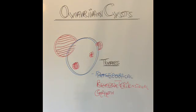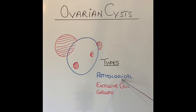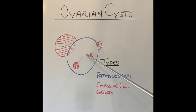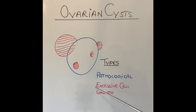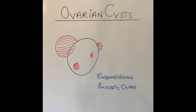In contrast to functional cysts, pathological cysts are not related to hormonal changes and can occur before or after menopause. They result from excessive cell growth in the ovary — either of the germ cells that produce hormones and form the egg, or cells on the surface of the ovary. They vary in size from very small to very large. The vast majority are benign, but a small percentage can be cancerous.